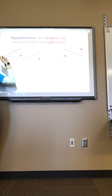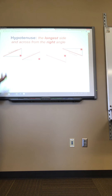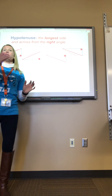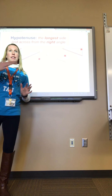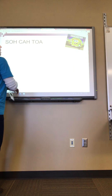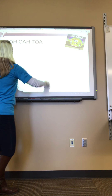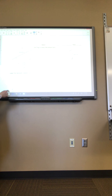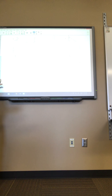The hypotenuse is the easiest one to locate because it's directly across from the right angle. You all know how to find the hypotenuse — remember, it's the longest side.